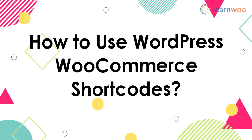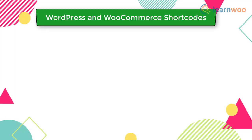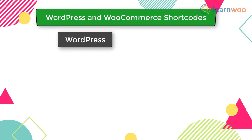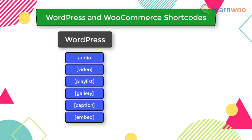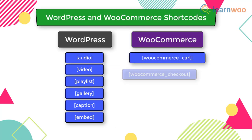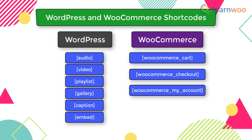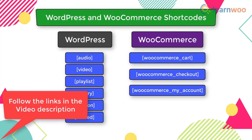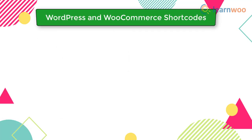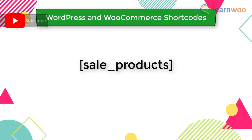In this video tutorial we will provide some basic insights on how to use WordPress and WooCommerce shortcodes. WordPress has some default shortcodes for audio, video, playlist, gallery, caption, and embedding. For WooCommerce there are shortcodes for cart, checkout, and my account pages. While these are mostly static shortcodes, they can be used anywhere dynamically. You can follow the link in the video description to read our complete guide on WooCommerce shortcodes.